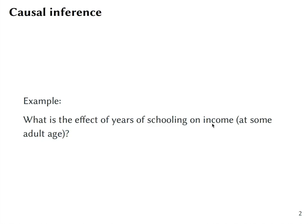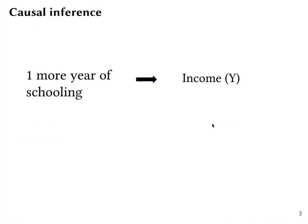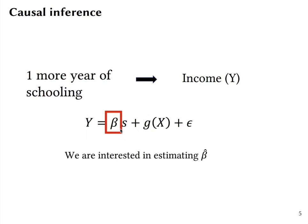When we are interested in the effect of schooling on income we generally ask how does one more year of schooling affect income. We usually estimate it with a regression where we are interested in the parameter beta.